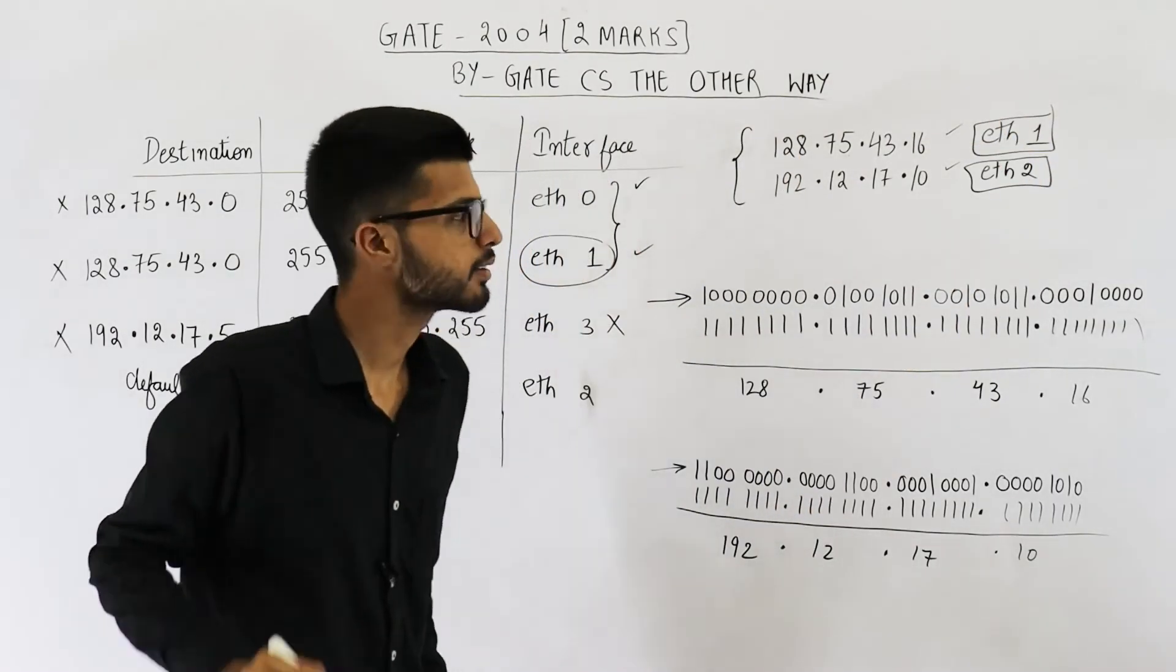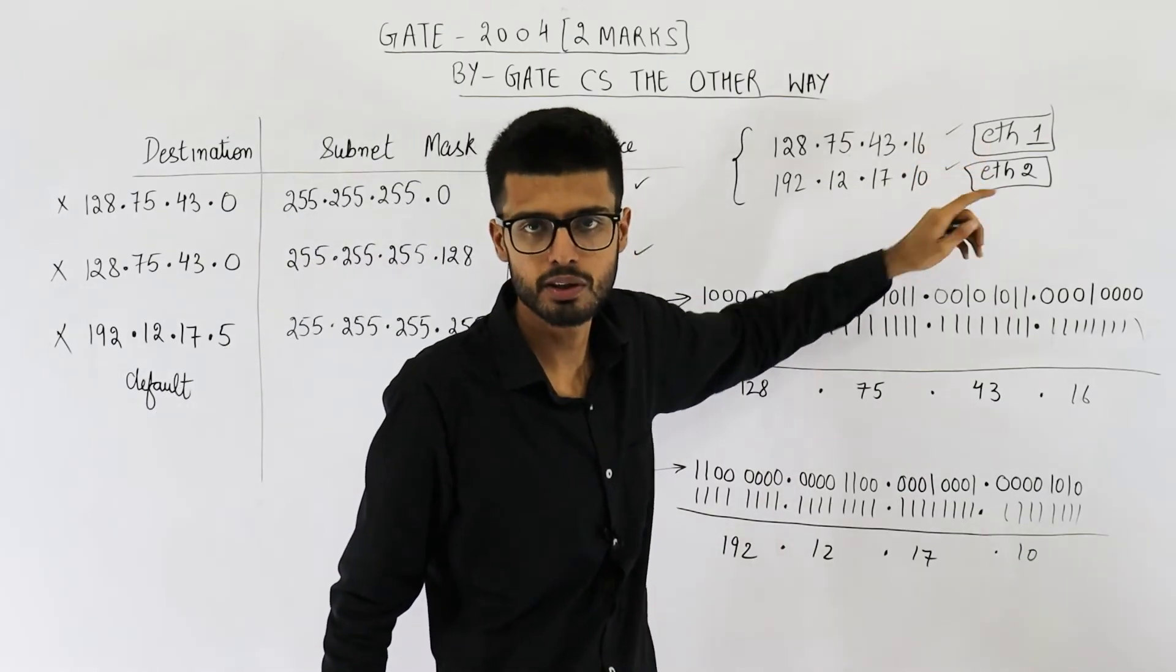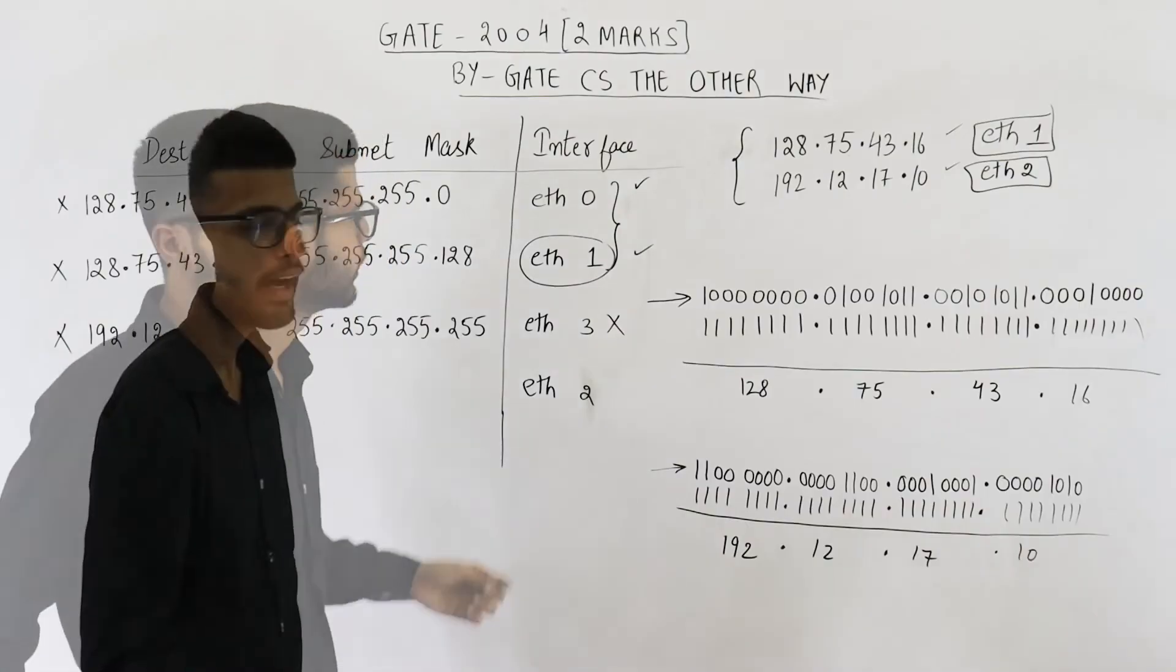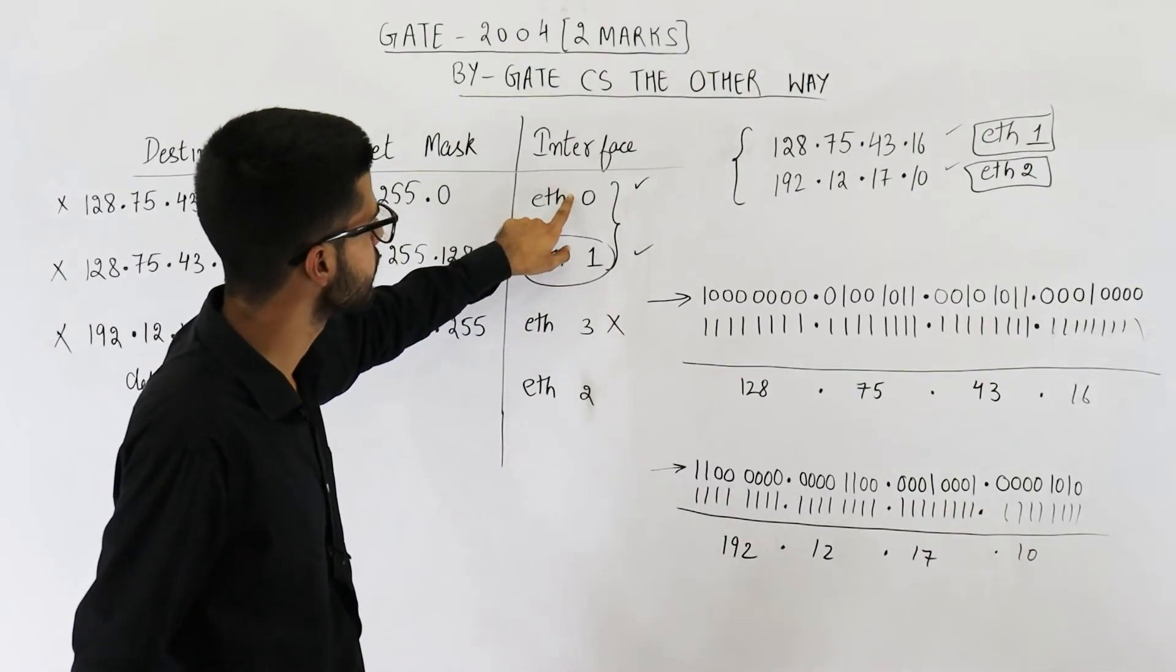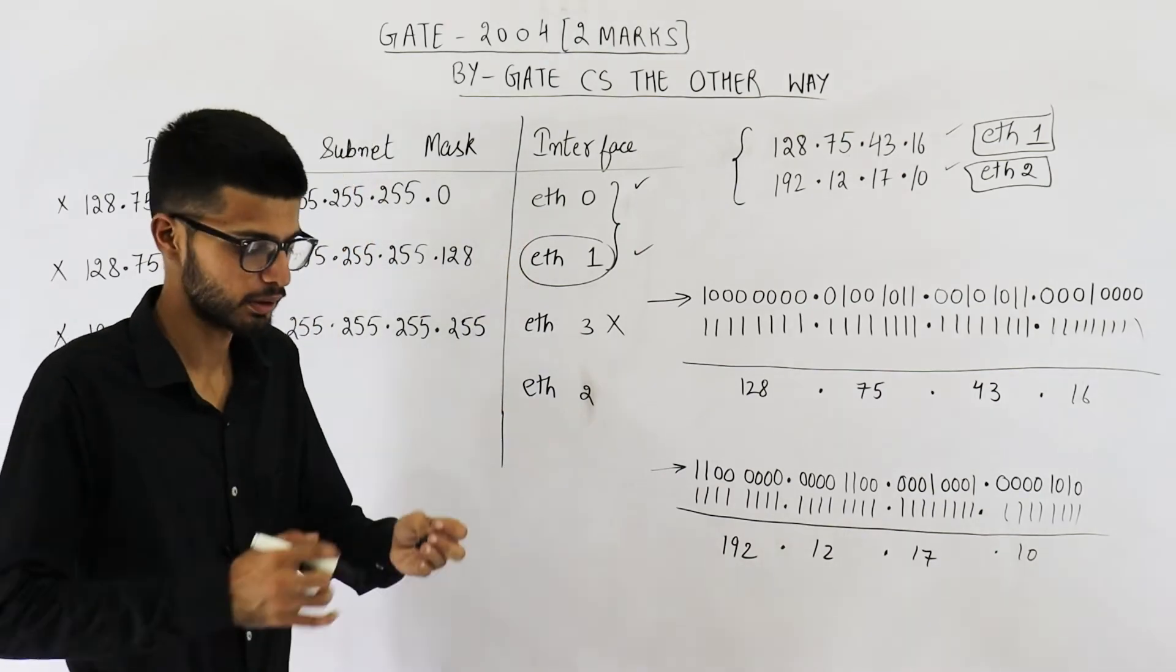What is the answer? Answer is Ethernet 1 comma Ethernet 2. Just be careful about the order. And here also you can notice it is 0, 1, 3, 2. Just be careful about such small things.